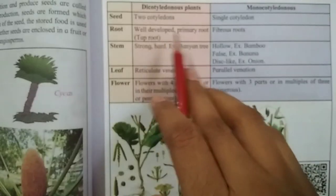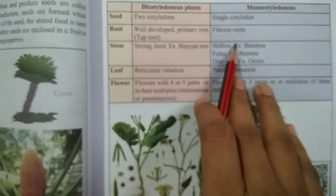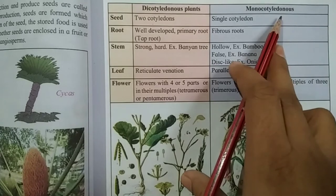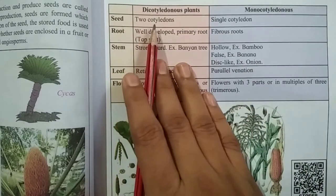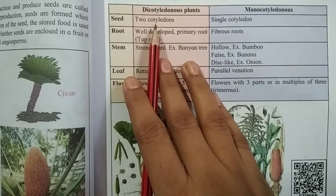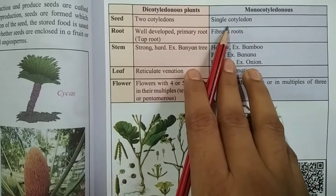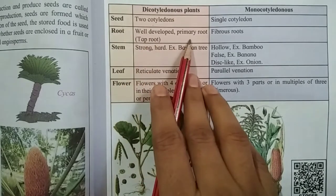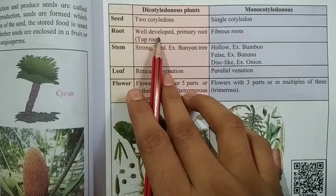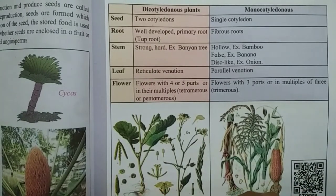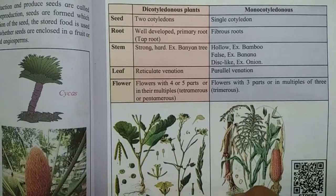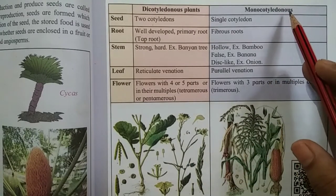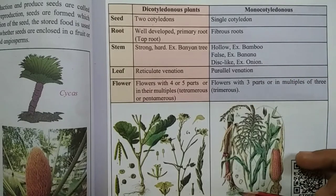See here on page 79, the difference between dicotyledonous plants and monocotyledonous plants. Regarding seeds: dicot has two cotyledons, while monocot has a single cotyledon. Regarding roots: dicots have well-developed primary tap roots, whereas monocots have fibrous roots.